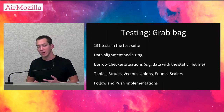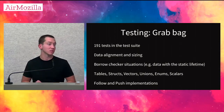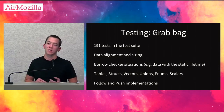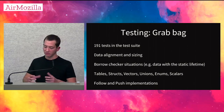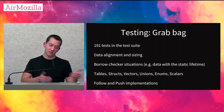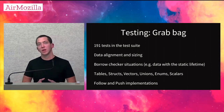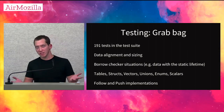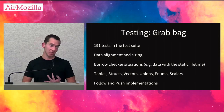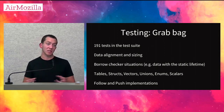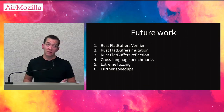Miscellaneous testing: we have 191 tests in the test suite and growing. We test data alignment and sizing, check various borrow checker situations — for example we had an issue with FlatBuffers used with static lifetimes that we fixed and now verify in the test suite. We have many tests for the different major types: tables, structs, vectors, unions, enums, scalars. And also many tests for the traits I mentioned, including Follow and Push.